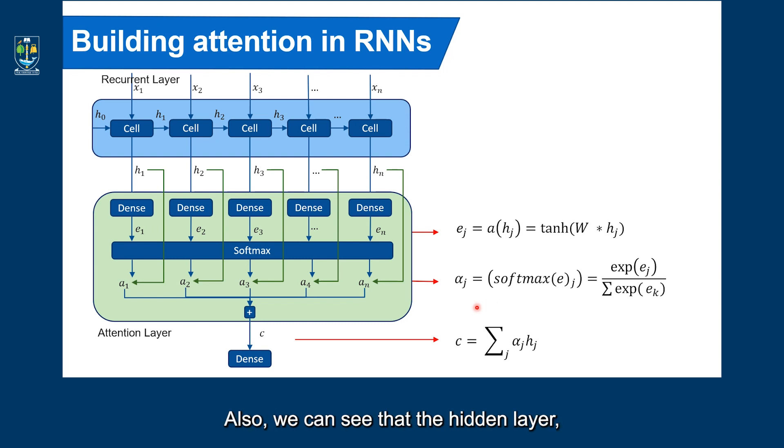Also, we can see that the hidden layer, each of the hidden layers, are multiplied with its respective weight alpha, and the results are summed to give the context vector. So the context vector has same length as the hidden state vector. The context vector represents a relationship between the current output and each term of the entire input sequence.